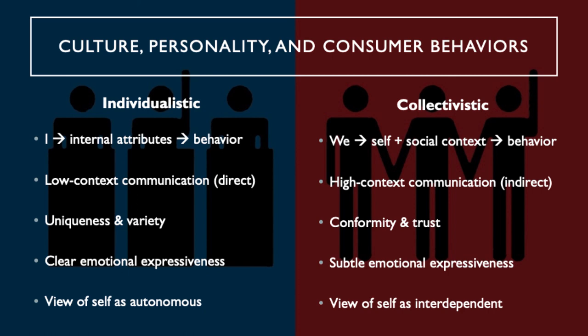Individualistic cultures teach children that the self is an autonomous entity responsible for itself, whereas collectivistic cultures teach children that the self is interdependent and cannot be isolated from social context — that has tremendous influence on how we learn to see the world. Individualists derive esteem from individual achievement, whereas collectivists feel best in relation to interpersonal dynamics such as being friendly or supportive. Collectivists also tend to have a more subtle approach to expressing emotions and are particularly reluctant to express socially undesirable emotions like anger because it disrupts social harmony.